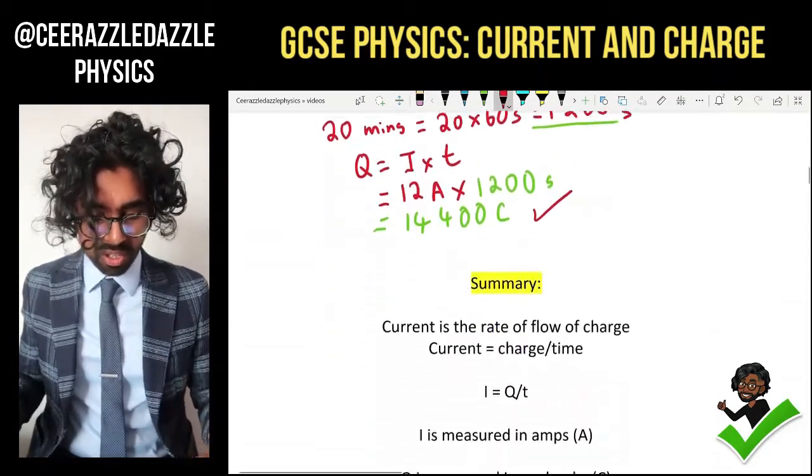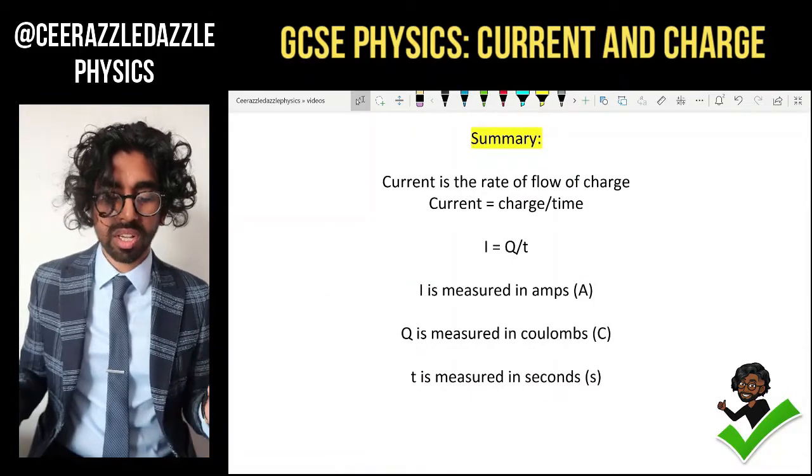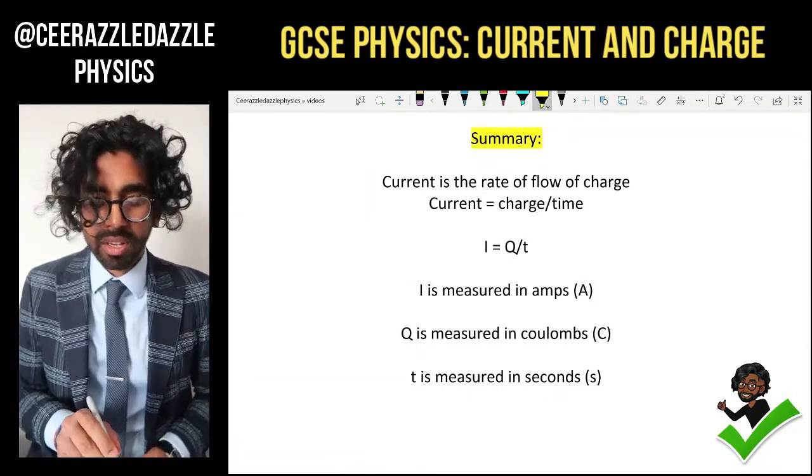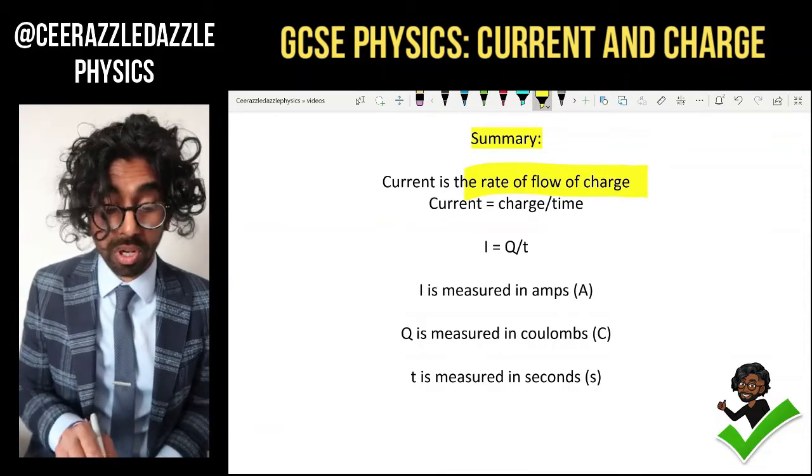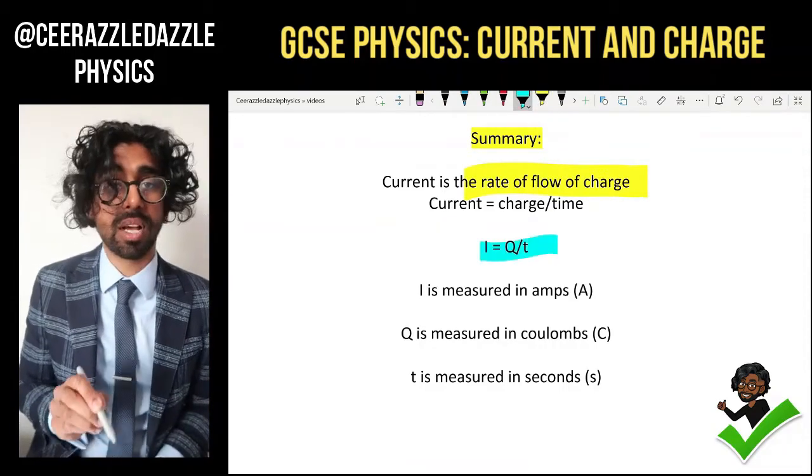And that's it for today's session. Short and sweet. Summary. Let's have a little summary here. Current is the rate of flow of charge. Current is equal to charge divided by the time.